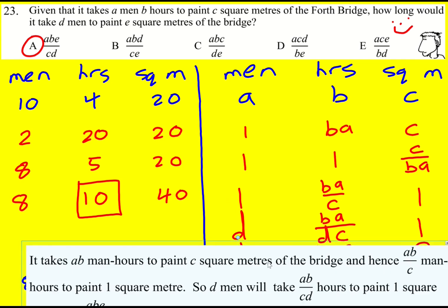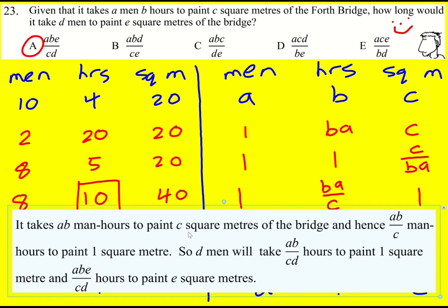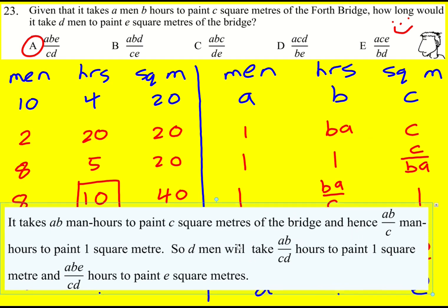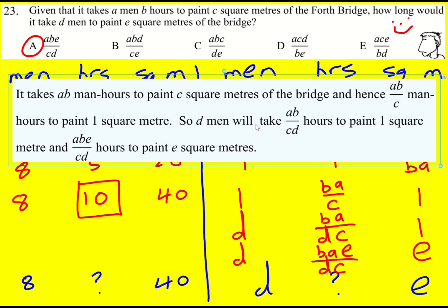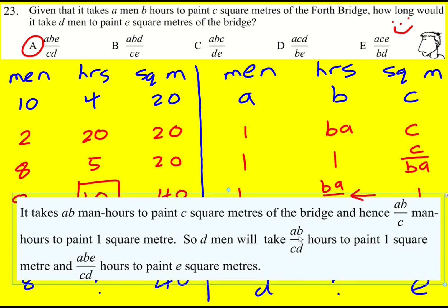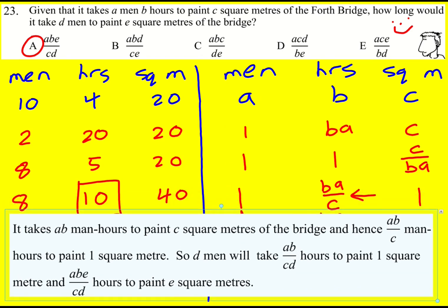I'll just share how the answers do it. They do it in similar lines, they don't make a table. They say it takes AB man-hours to paint C square meters. That's what I did in my second row, and hence AB over C man-hours to paint one square meter, which is what I wrote down here. They've just gone straight there. So D men will take AB over CD, so it's along similar lines, and then times by E again. I quite like my kind of careful way, but this is an even quicker way of doing it.